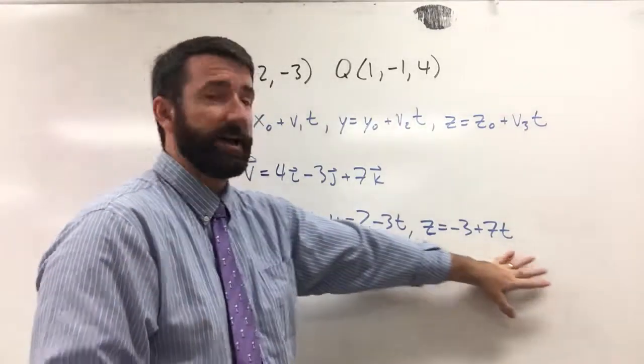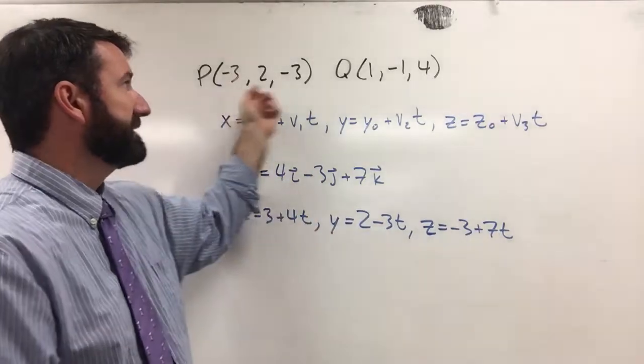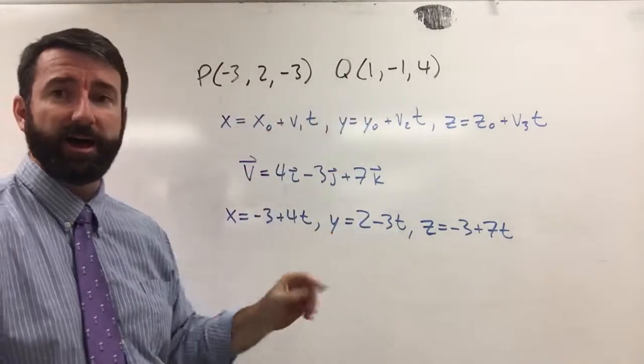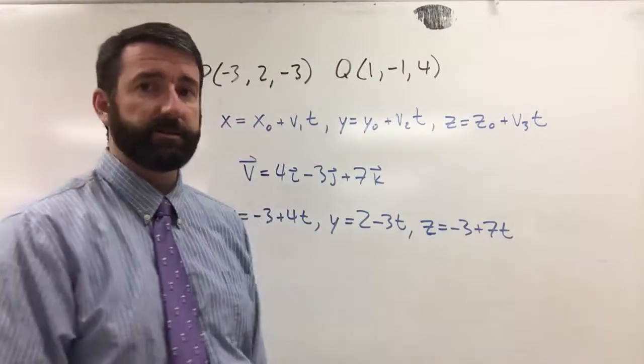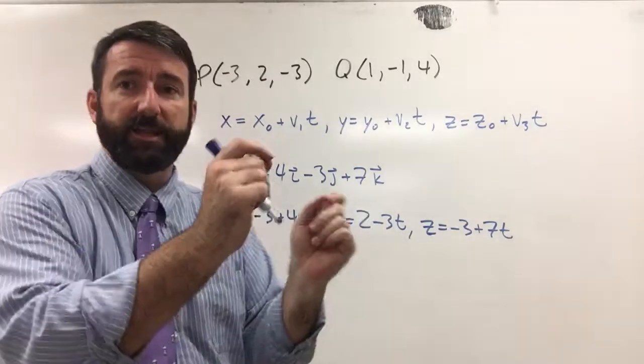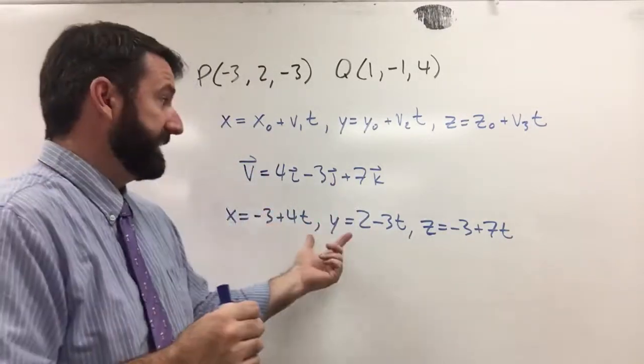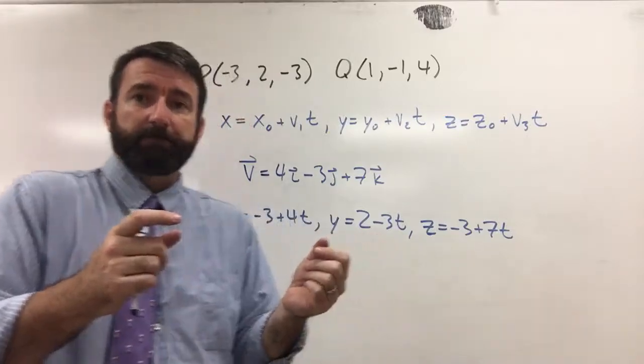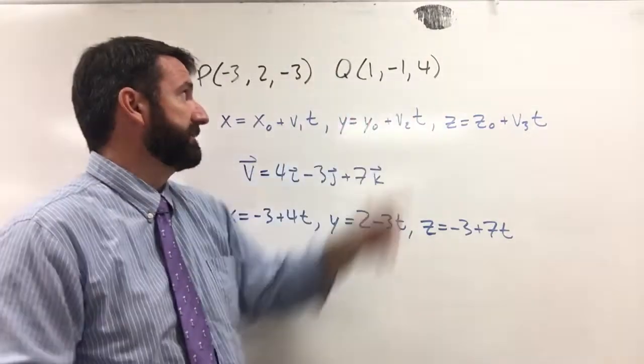All right, so now the next task is to parameterize the line segment. So right now we've got a line going off to infinity in both directions, to positive infinity and negative infinity. We want just the line segment. So we need to put some parameters on t so that we're just getting that line segment from this point to that point.